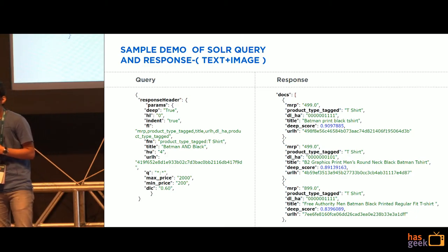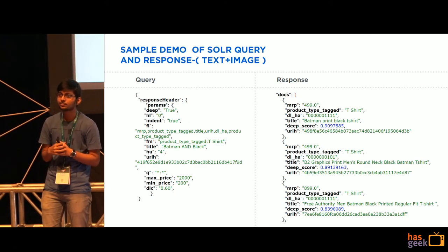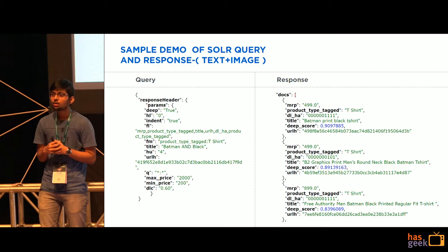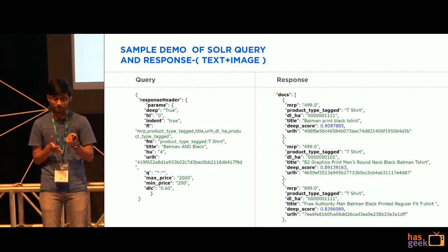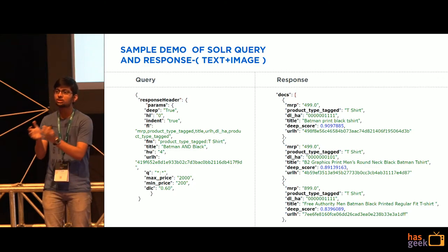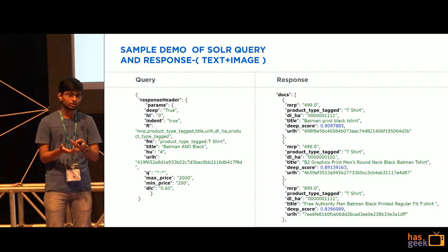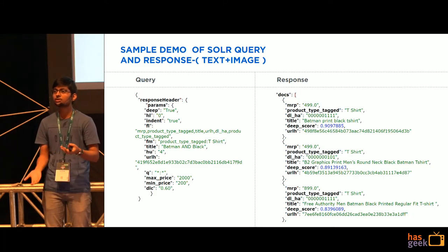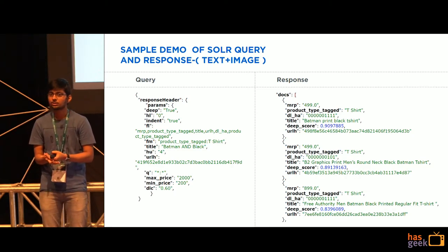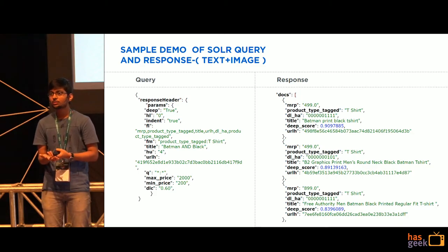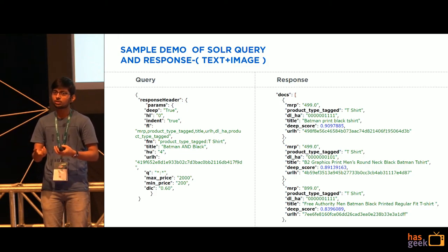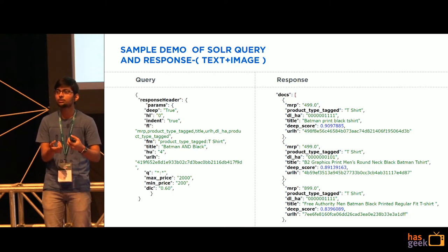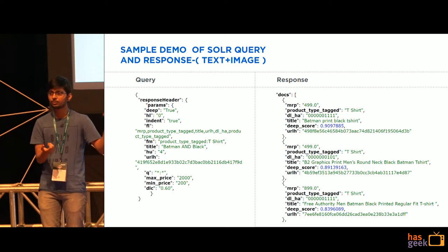Regarding the hashing technique: for our use case, the hashing function needs to group similar-looking products into the same bucket. Local sensitive hashing and kernelized local sensitive hashing are well known for this purpose, but the problem is you don't have much control over hash function generation. We needed a mechanism where the correlation between deep learning features can be preserved, which is why we went with self-taught hashing.